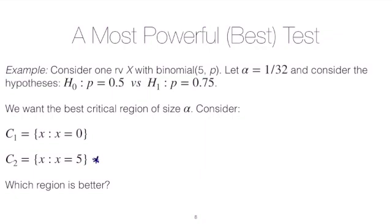And so it seems like this critical region, critical region number two, is better than critical region number one, because if you decided to reject if you got zero heads, rejecting means overturning the null in favor of the alternative. You would be saying getting zero heads is evidence that the coin is biased towards heads. That would be a bad critical region.